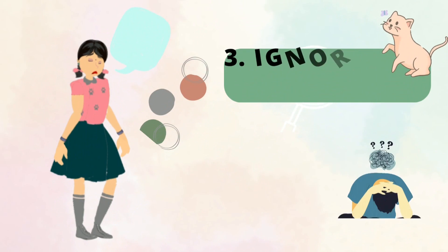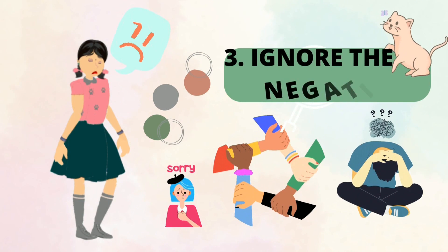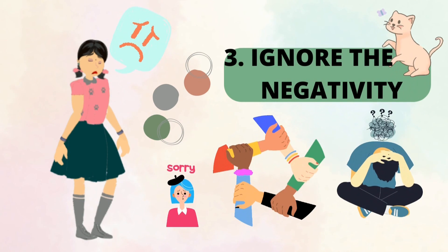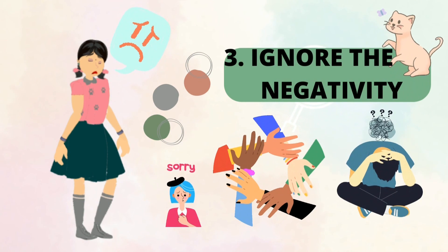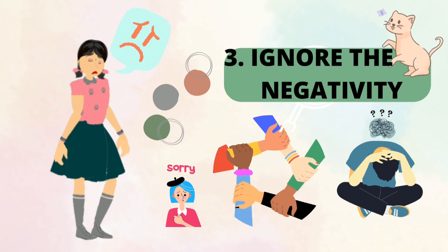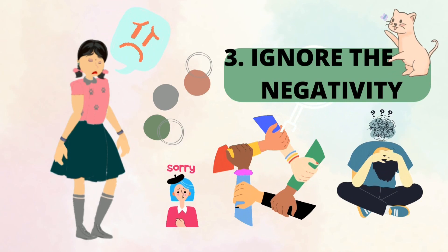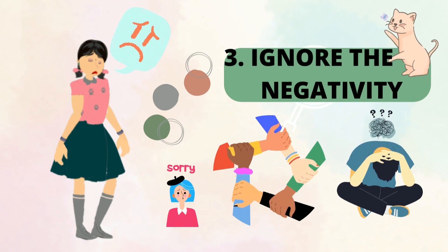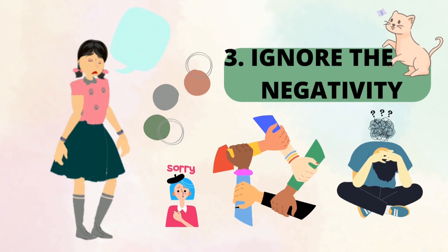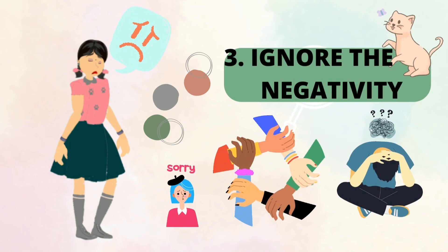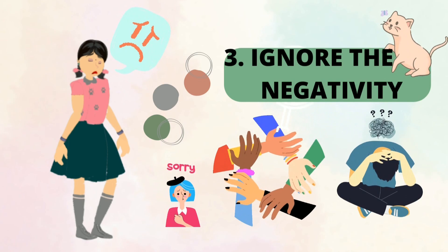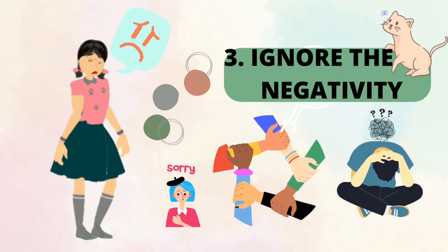The third tip is to ignore negativity. Think whether you have any unpleasant memory or incident that happened today. If so, forgive — if someone hurt you physically or mentally. But if it is your fault, examine your own behavior and try not to repeat it.